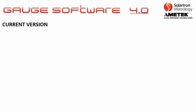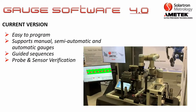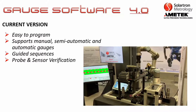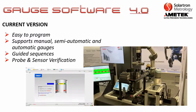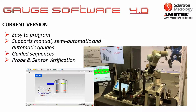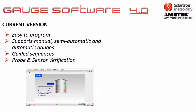In terms of the current version, there are several key features. First, it is easy to program. It supports manual gauges as well as semi-automatic and automatic gauges. It also has guided sequences, which is especially helpful for complex gauges, and it has probe and sensor verification that can be done in multiple ways.